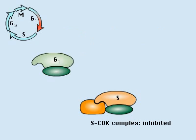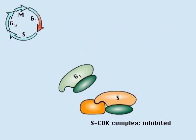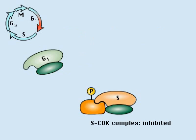Near the start of S-phase, a G1-CDK phosphorylates the inhibitor, targeting it for degradation.